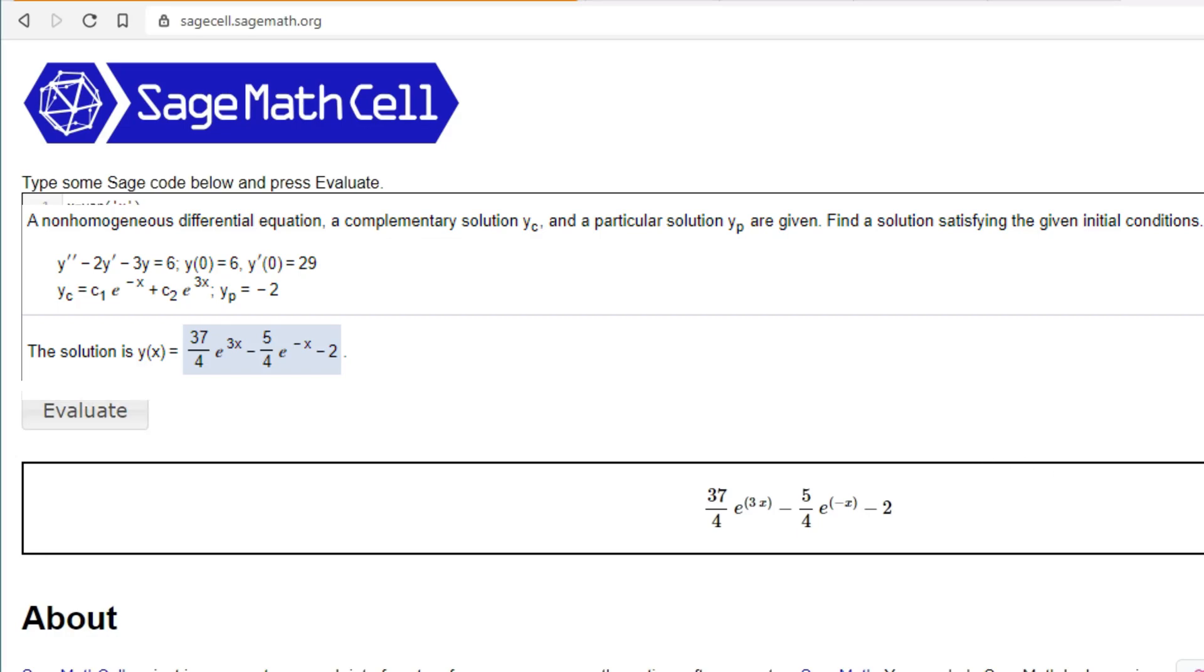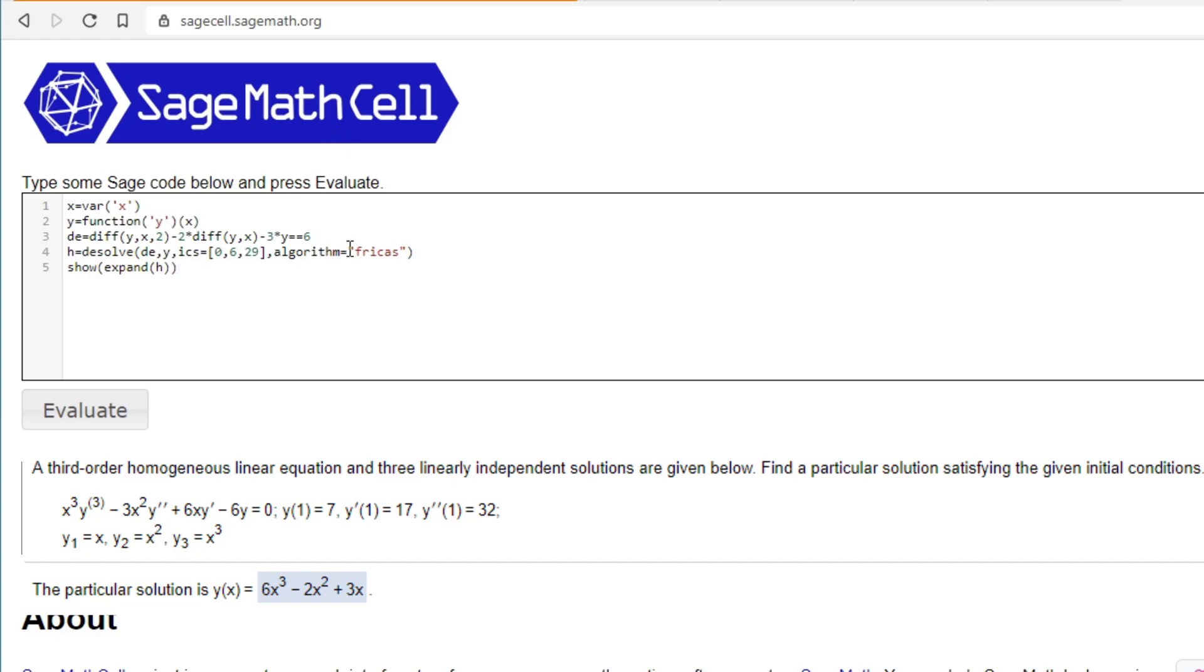On to the next one. This time we have a third order one. And solving this one by hand would be very annoying. All we need to do in SAGE though is x to the power of 3 times the third derivative minus 3 times x to the power of 2 times the second derivative, plus 6 times x times the first derivative minus 6 times y equals 0.